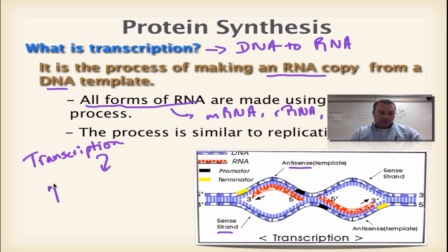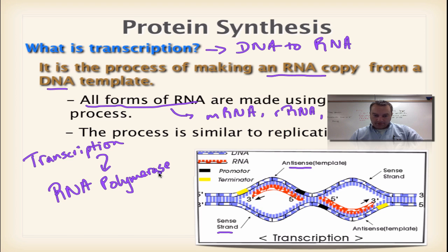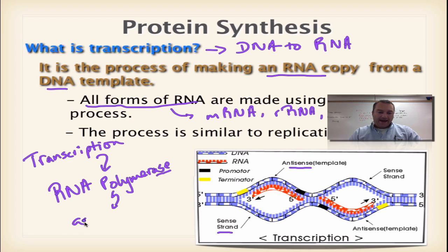Transcription is done by an enzyme called RNA polymerase. Remember, the suffix '-ase' means it's an enzyme — this enzyme makes the RNA polymer, just like DNA polymerase. RNA polymerase will also act like helicase, so not only can it make RNA, but it's going to unzip the double helix.